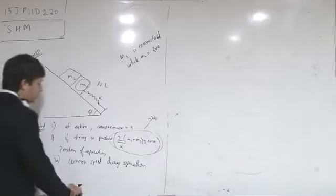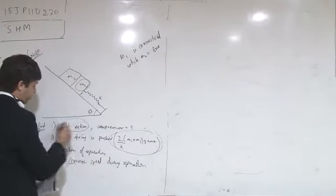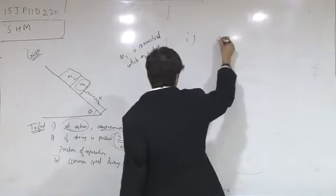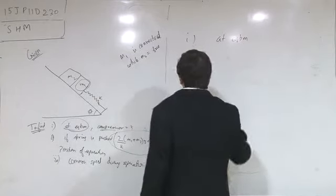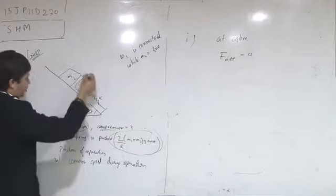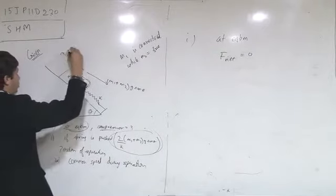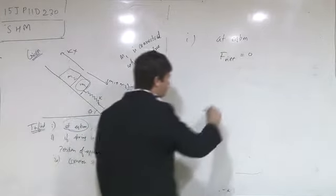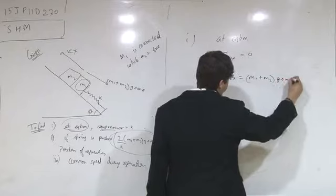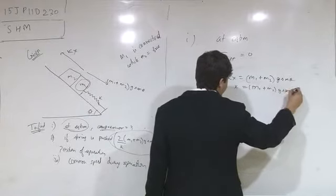We have to find three parts. For the first part, at equilibrium, we have to find the compression. At equilibrium, f_net should be equal to zero. The downward force exerted is (m1 + m2)g sinθ, which should be equal to kx. So x is equal to (m1 + m2)g sinθ divided by k.